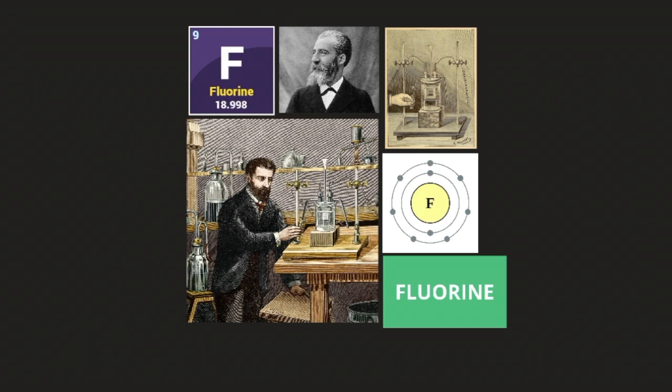Fluorine has nine protons, nine neutrons, and nine electrons, and one more electron would stabilize the atom. In its natural state, fluorine is found as a compound with metals and other elements — specifically calcium, potassium, and sodium. Sodium fluoride is found in your toothpaste because it's a compound of sodium and fluorine, the most reactive halogen on the periodic table.